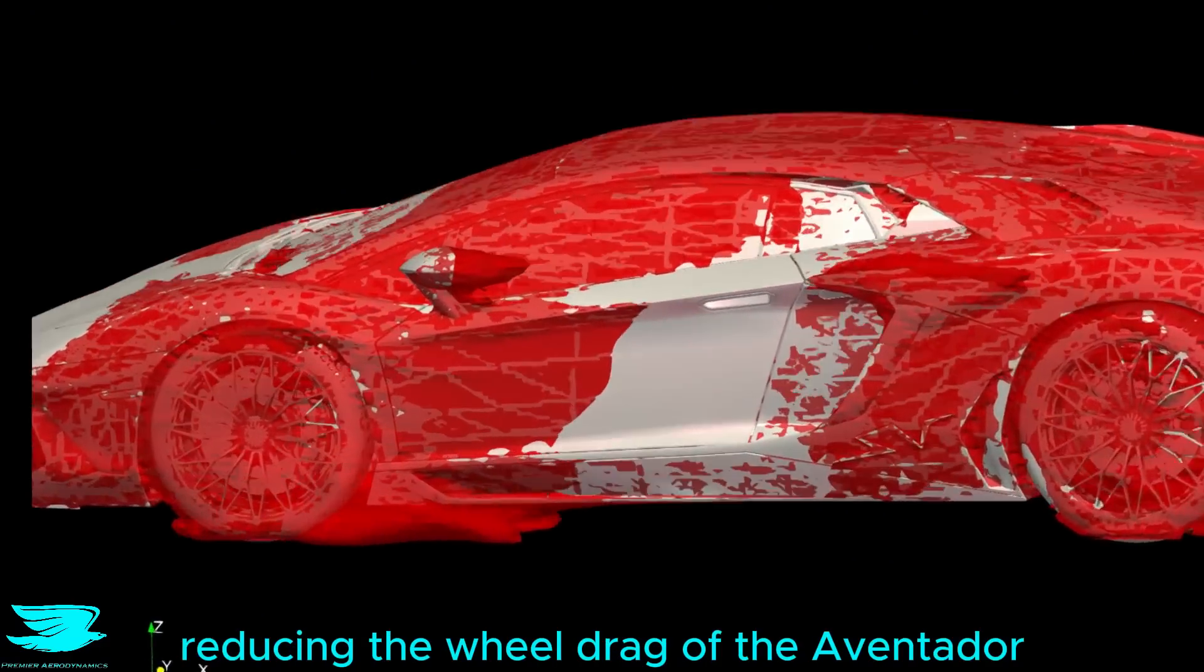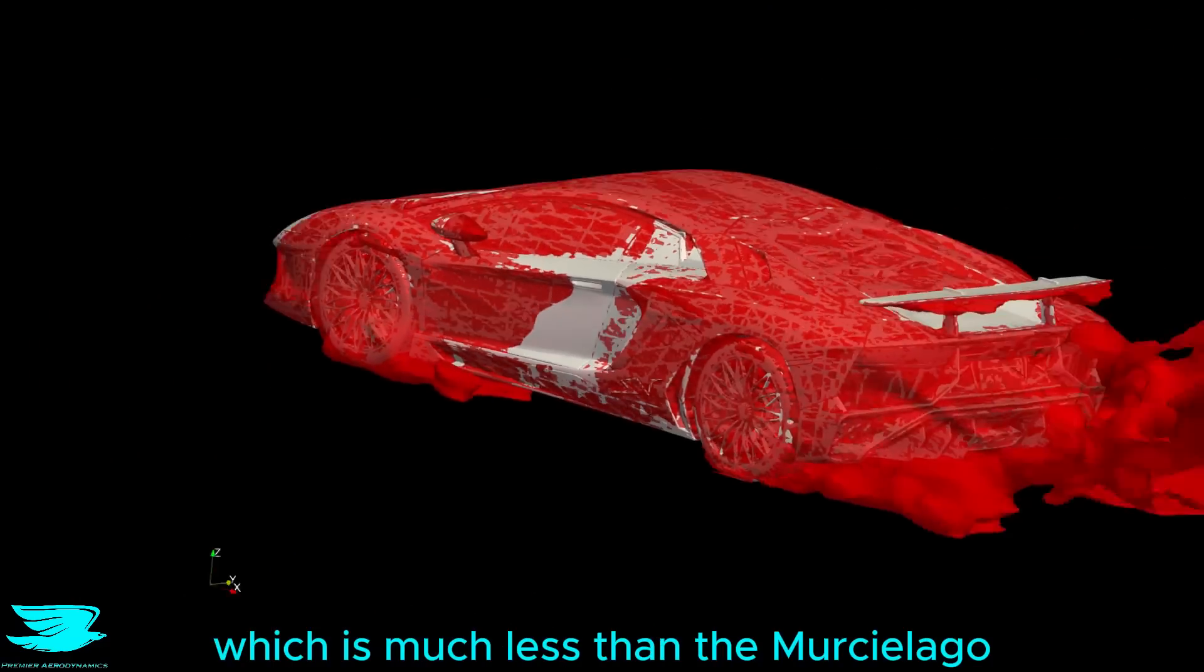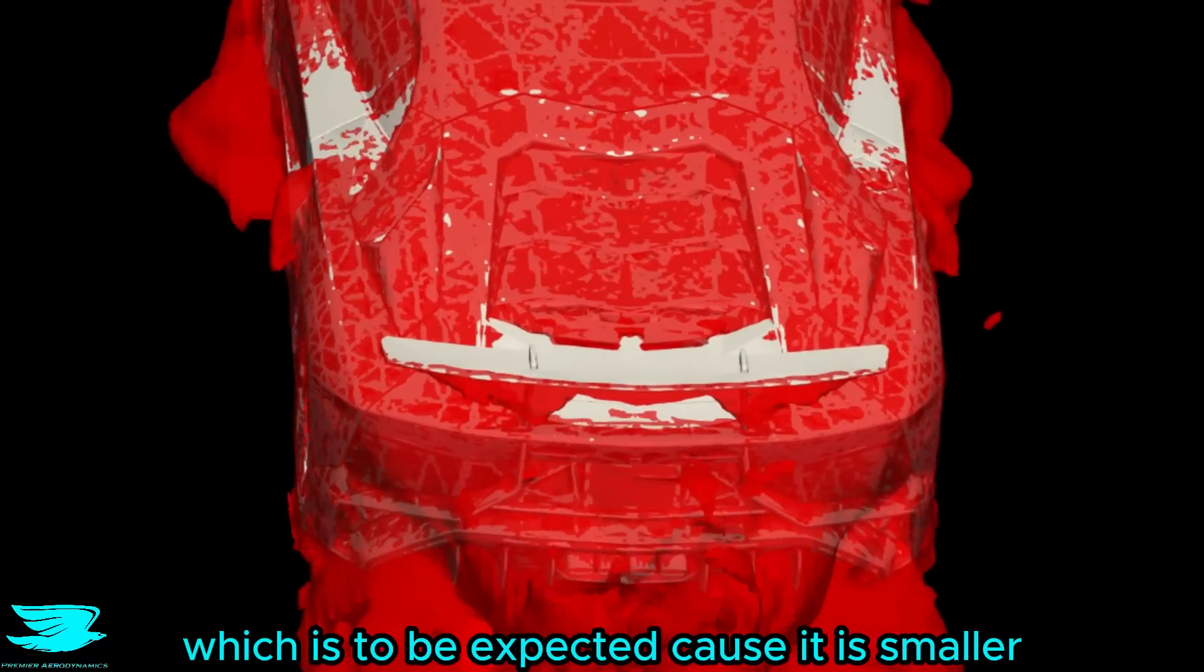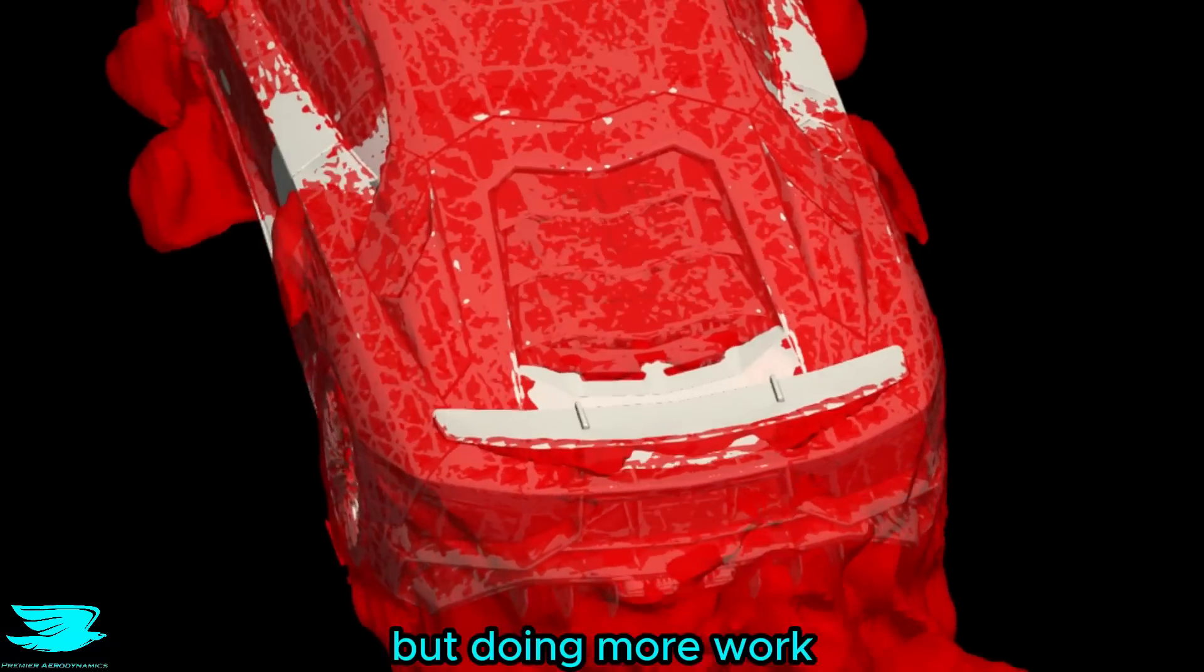Lamborghini have done a great job reducing the wheel drag of the Aventador, which is much less than the Murciélago. The rear wing is maybe a little worse, which is to be expected because it is smaller but doing more work.